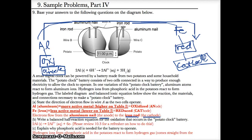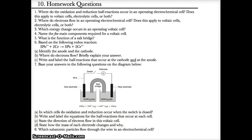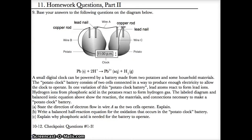Parts B and C you can do on your own. For part C, reading the text will show that hydrogen ions from phosphoric acid in the potatoes react to form hydrogen gas — that's why phosphoric acid is needed for the battery to operate. Please complete checkpoint questions one through three for tomorrow's class. Thank you, have a great day.